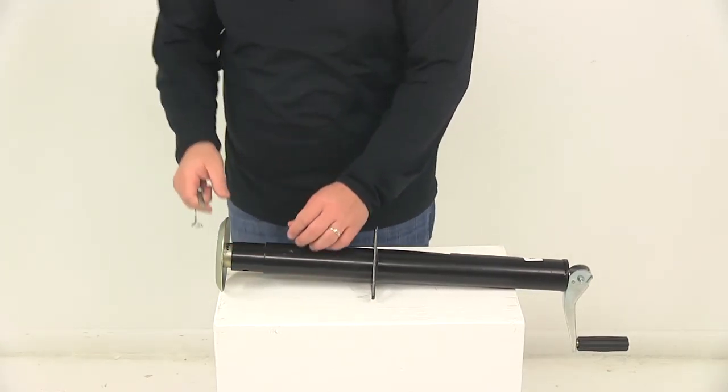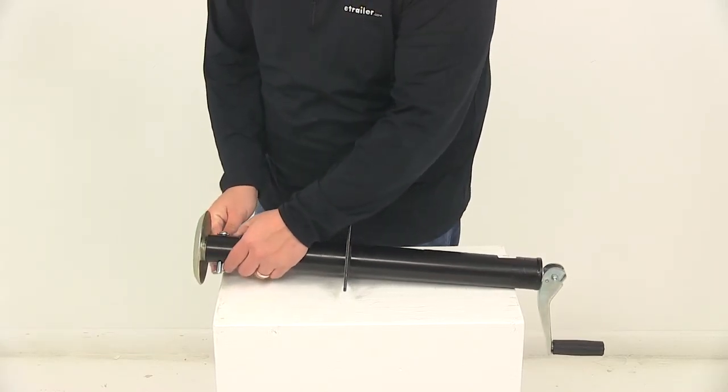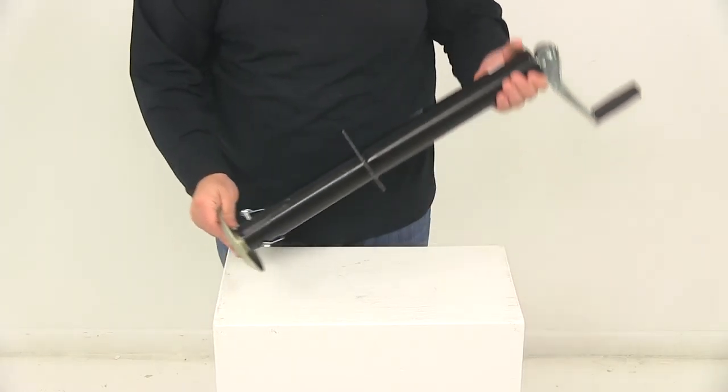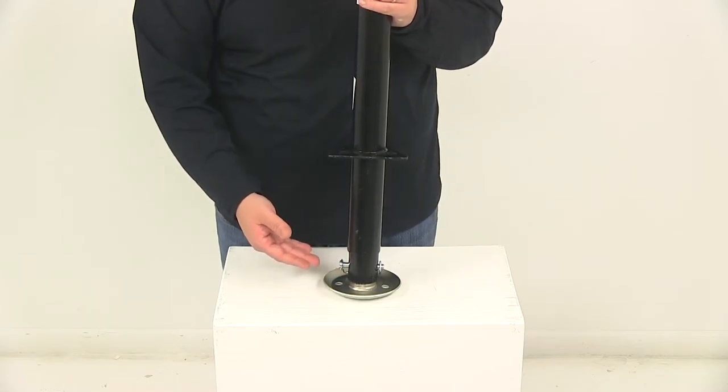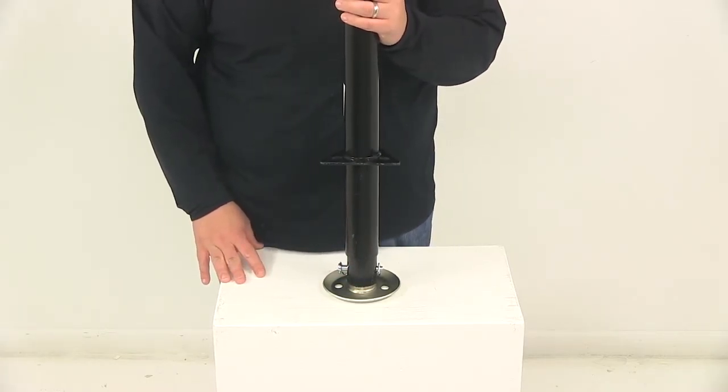Then we're going to place in our pin, take it all the way through, bring our clip around and secure it in place. Again, this is going to be a good travel position because it reduces the amount of extension that we have on the bottom of our jack, which you don't want to have to worry about when you're on the road.